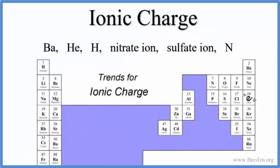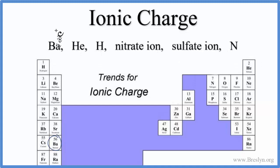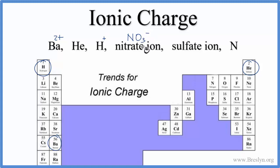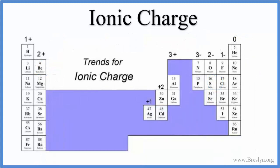Let's wrap up with a little practice. Write the charge on each of these when it forms ions. Barium is group 2, so 2+. Helium is a noble gas, so it has no charge. Hydrogen is group 1, so that's plus. The nitrate ion, NO3, is minus. The sulfate ion, SO4, is 2-. And nitrogen is 3-. This is Dr. B with how to figure out the charges on ions. Thanks for watching.